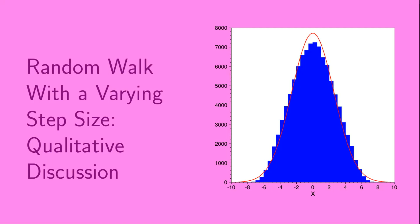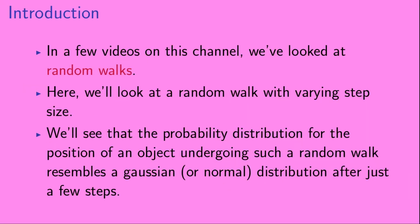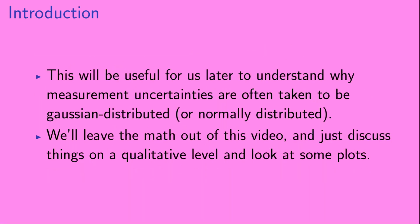Welcome to Random Walk with a Varying Step Size: Qualitative Discussion. In a few videos on this channel, we've looked at random walks. Here, we'll look at a random walk with varying step size. We'll see that the probability distribution for the position of an object undergoing such a random walk resembles a Gaussian, or normal, distribution after just a few steps. This will be useful for us later to understand why measurement uncertainties are often taken to be Gaussian distributed. We'll leave the math out of this video and just discuss things on a qualitative level and look at some plots.